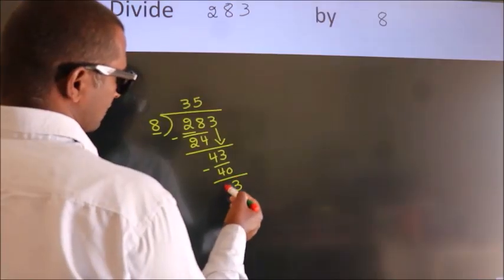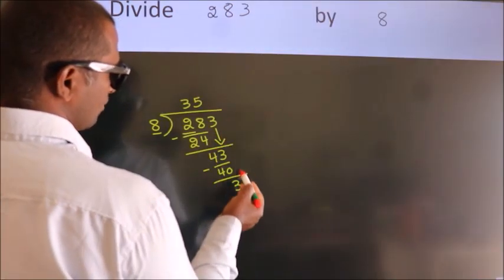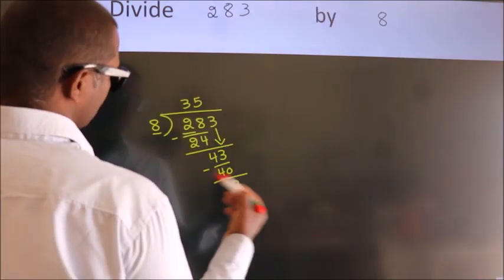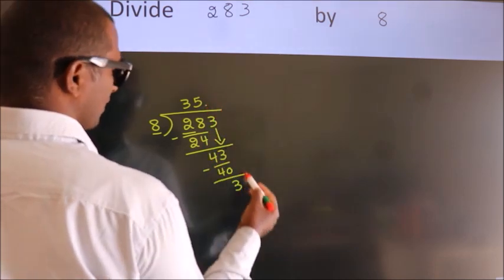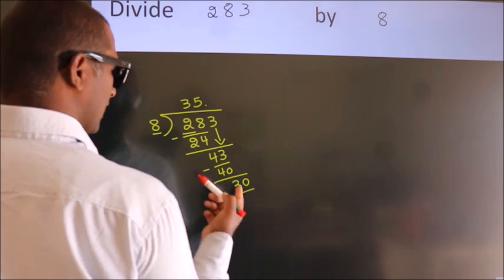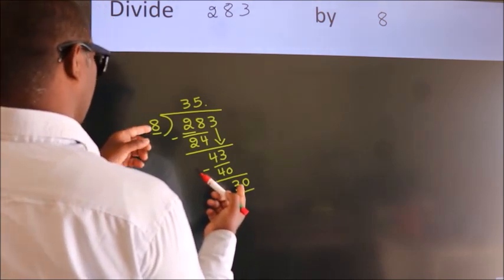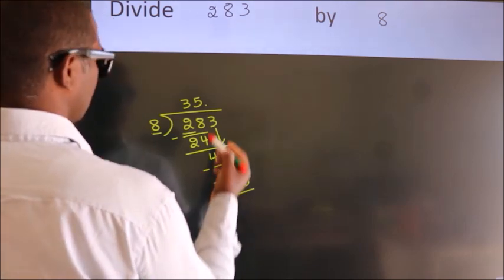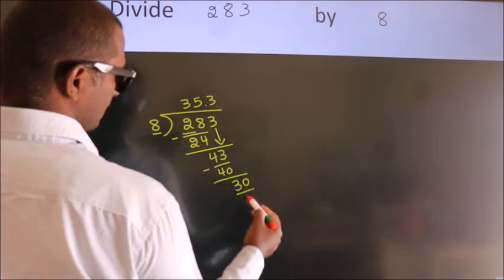After this, no more numbers to bring it down. So what we do is we put dot, take 0. So, 30. A number close to 30 in 8 table is 8 threes, 24.